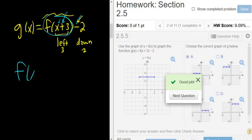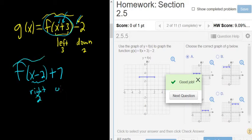So for example, if it was f of x minus 2 plus 7, the minus 2 on the x means we would be going right 2, and the plus 7 would mean we're going up 7. Hope that made sense.